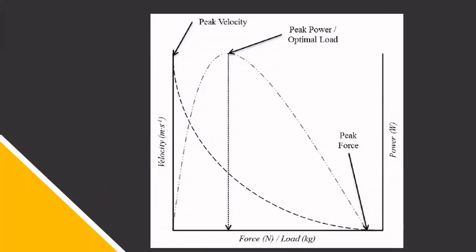We've seen that as concentric velocity increases, force decreases. This means that power, which is the product of these two variables, is greatest somewhere in the middle, where there is a moderate force multiplied by a moderate velocity, rather than one of the two values being low.